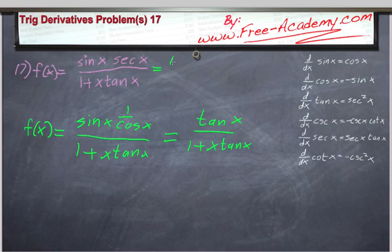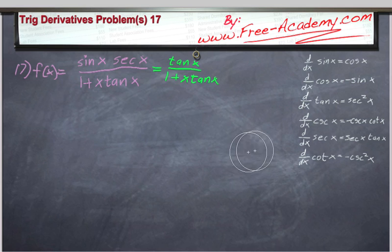So this is equal to the tangent of x divided by 1 plus x tangent of x. Let's rewrite that up there so it's out of our way. And that's about as simple as we can make it in terms of doing our derivatives.